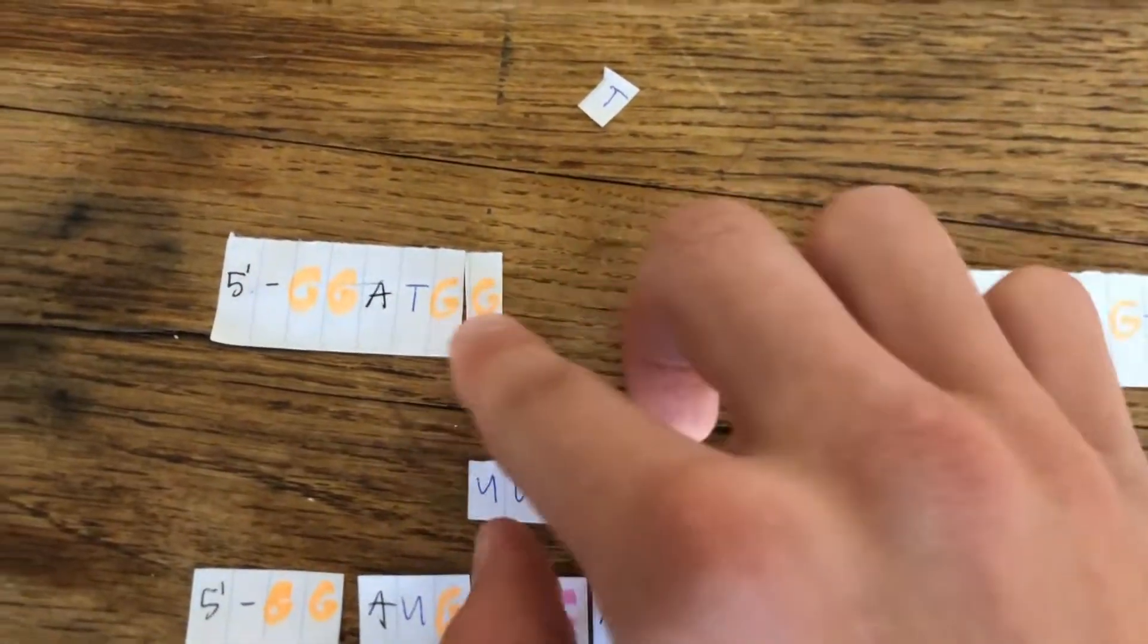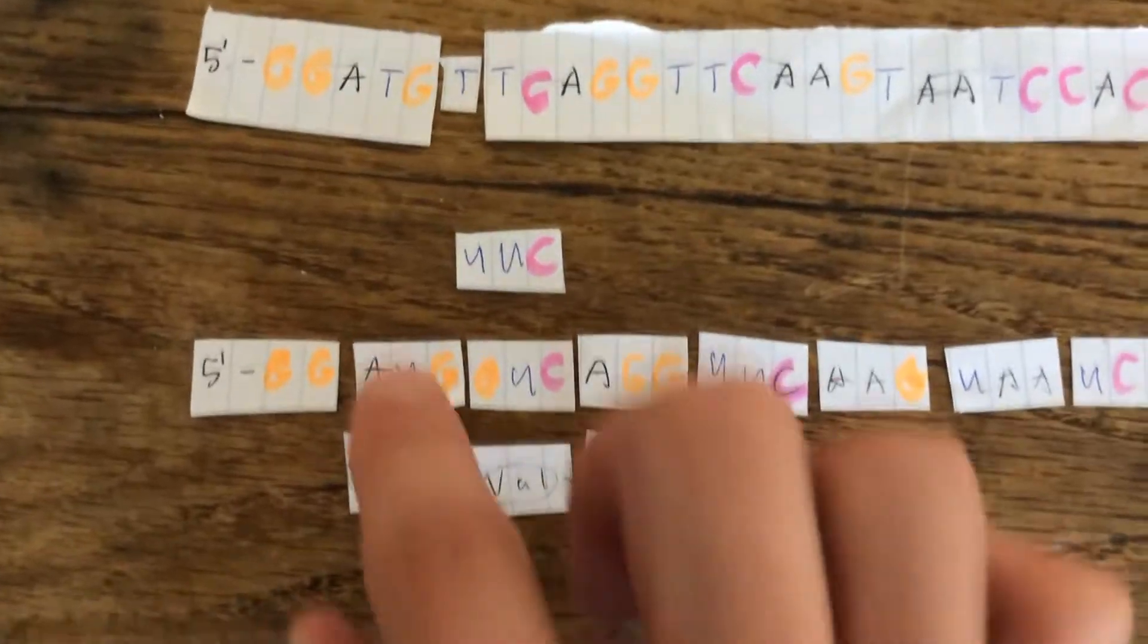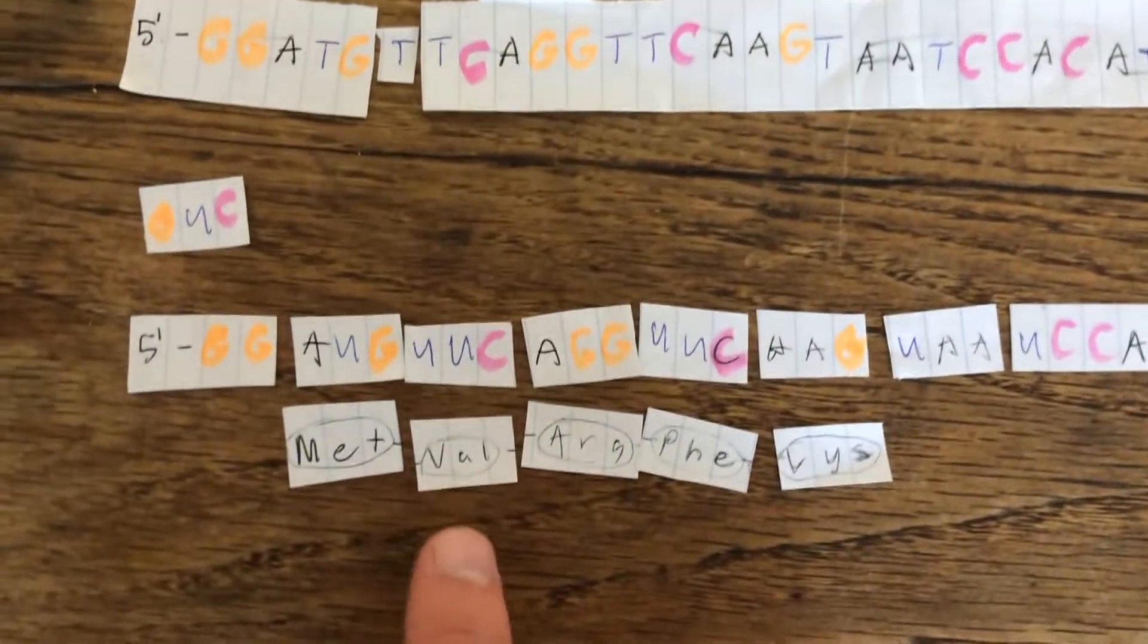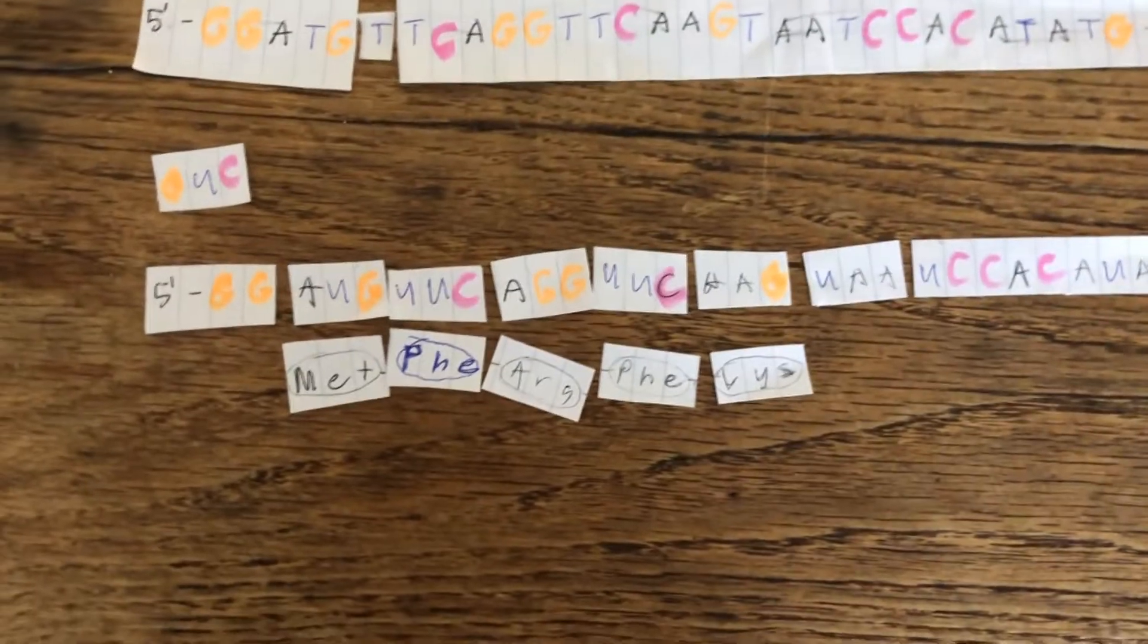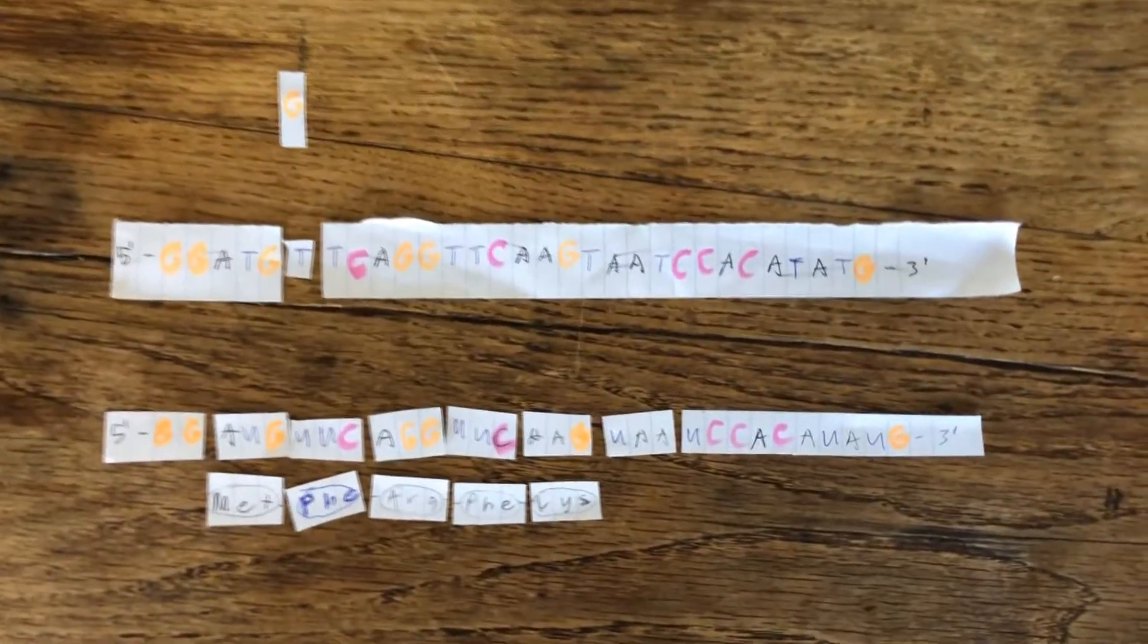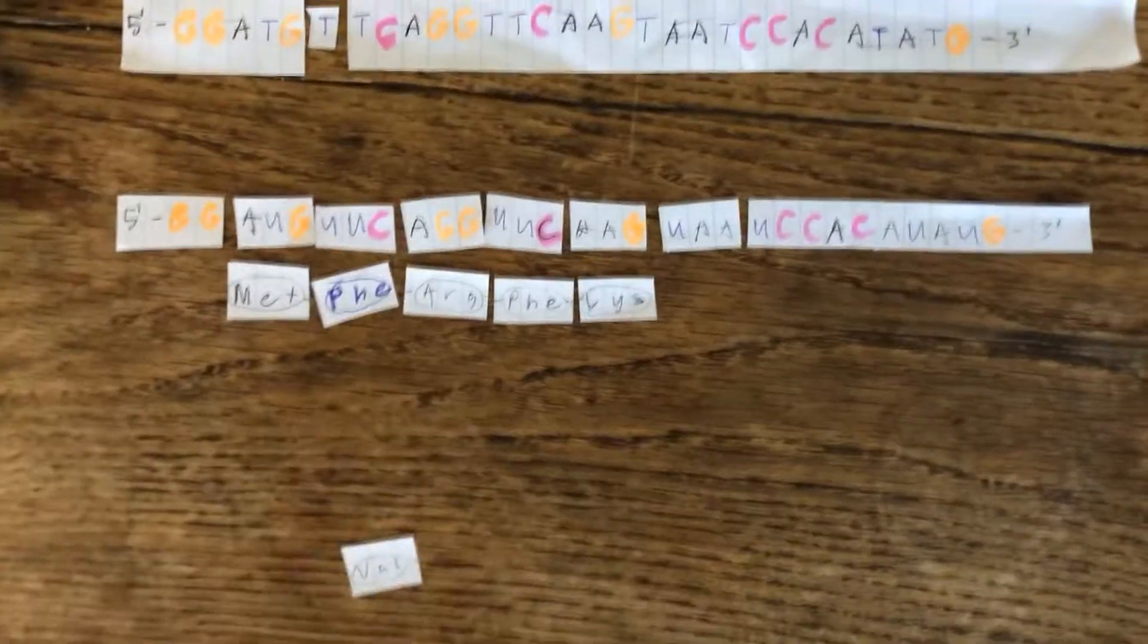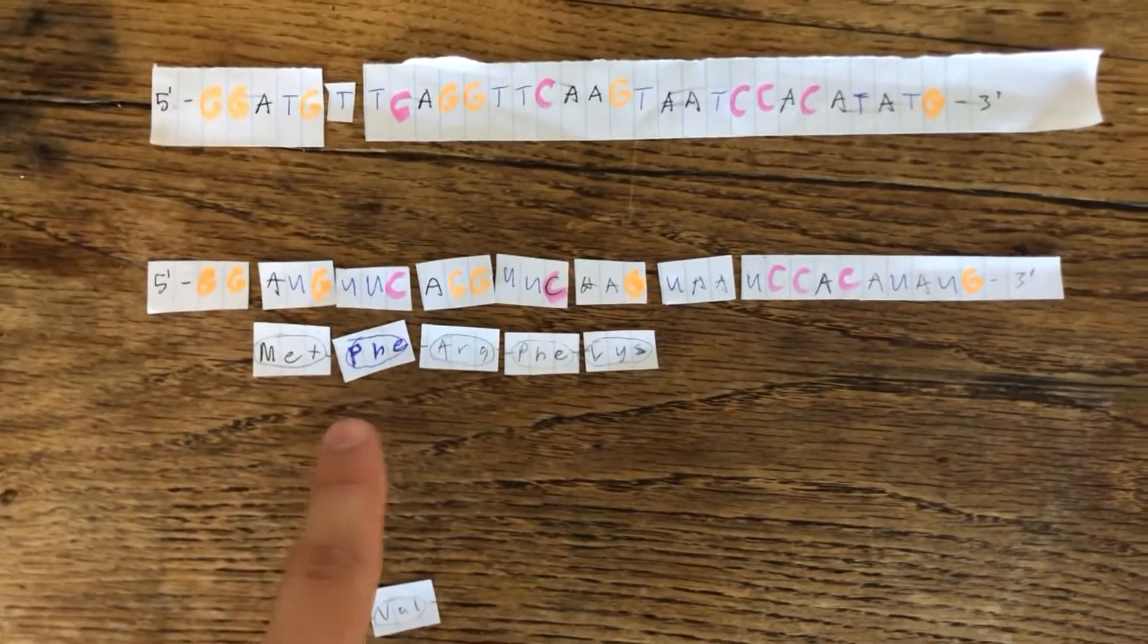In this first one, we'll have a thymine replace this guanine right here. That as a result is going to change this codon into UUC, which in turn will cause a missense on this protein. Because we replaced a G with a T, that's going to be a transversion, and then the replacement of this amino acid with phenylalanine is going to possibly result in a different protein that is nonfunctional.